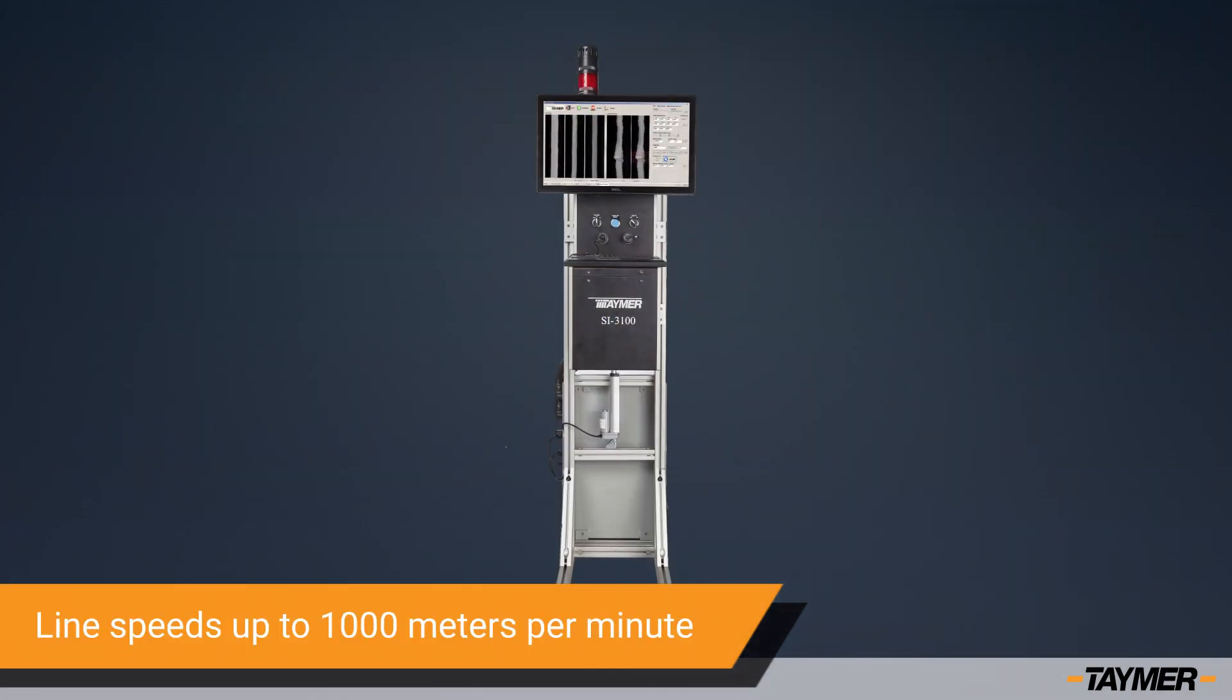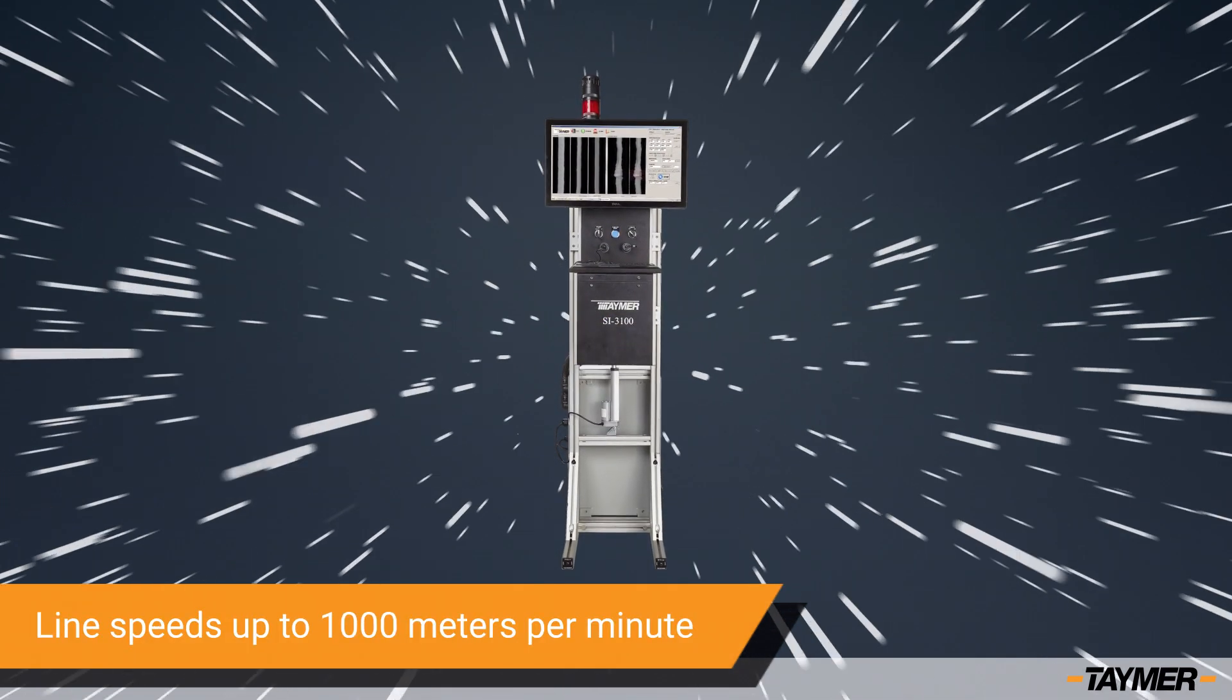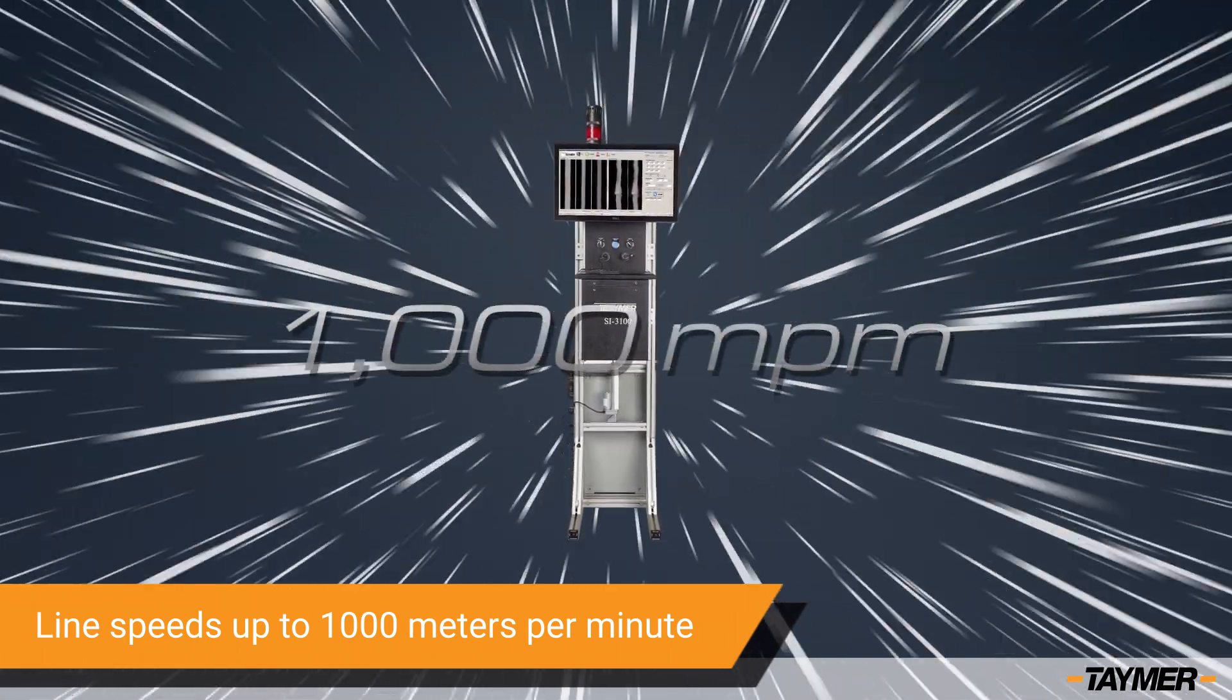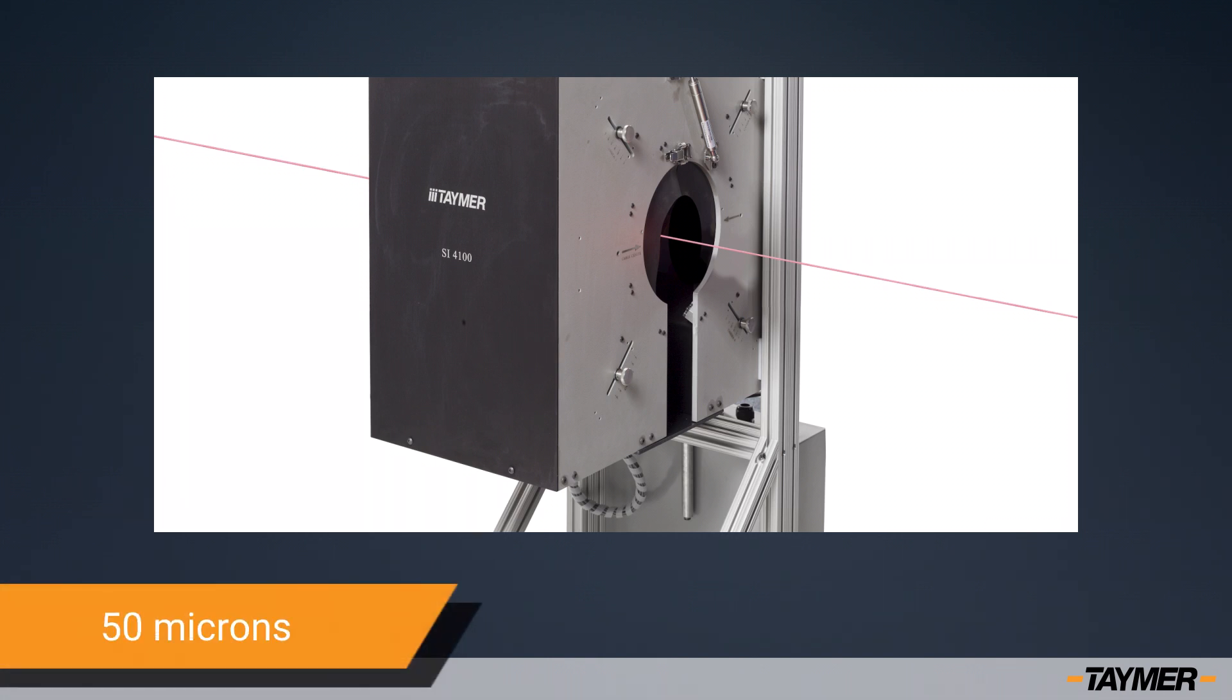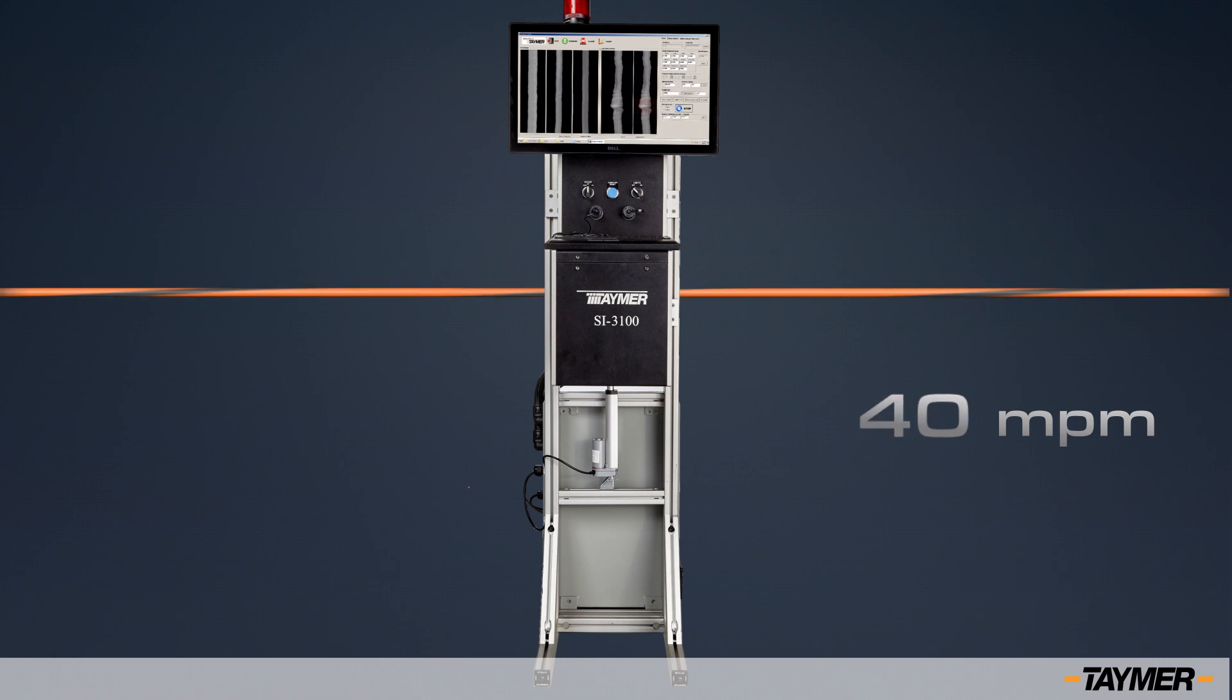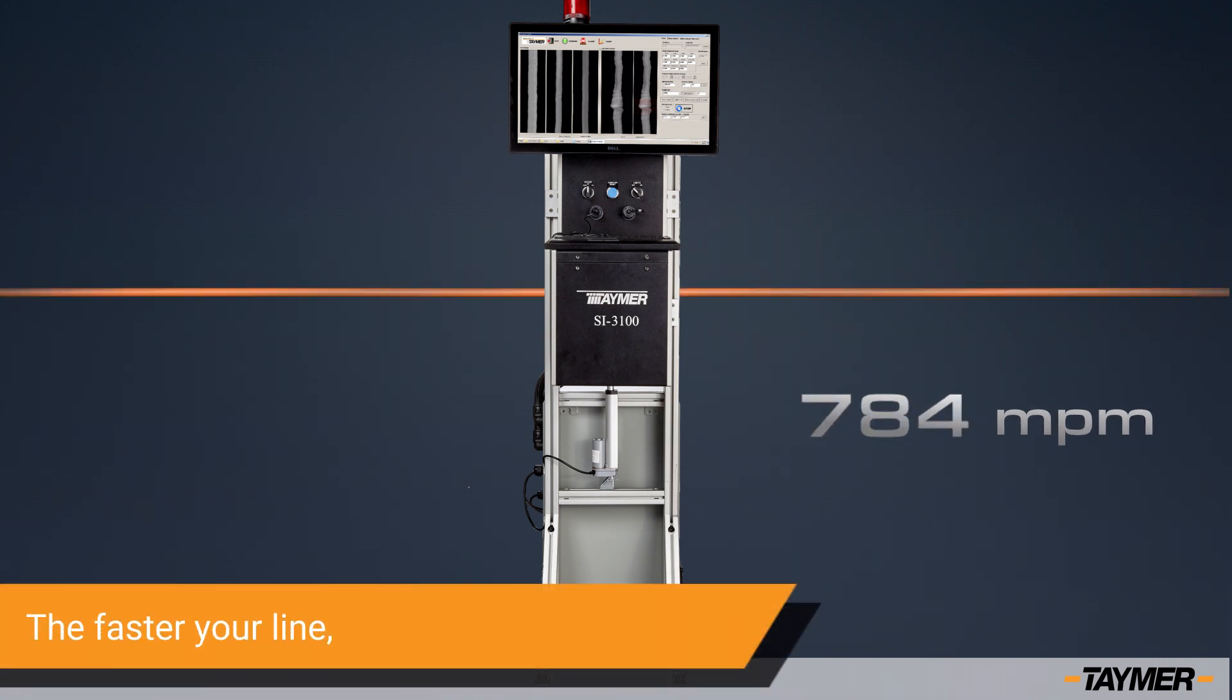Taymer surface inspection machines are currently deployed on inline speeds up to 1,000 meters per minute for product sizes as small as 50 micron or as large as 500 millimeter. Our inspection matches your speed. The faster your line, the faster our inspection.